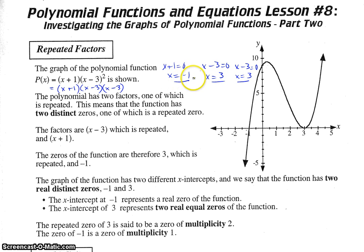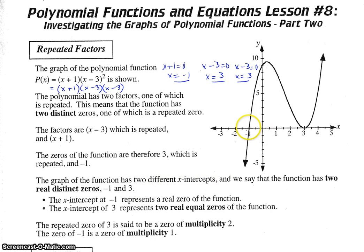So we have two distinct zeros, negative 1 and 3, one of which — 3 — is a repeated zero. The graph of the function has two distinct x-intercepts. One of our x-intercepts is x equals negative 1, and the other x-intercept is x equals 3. Now, how does this repeated zero or factor show up as an x-intercept?